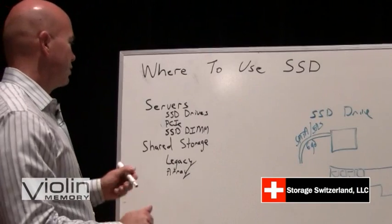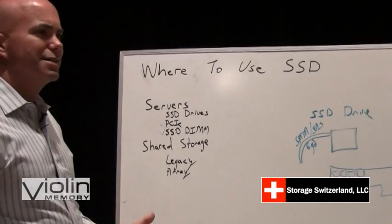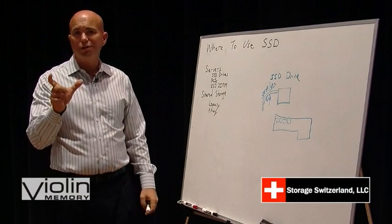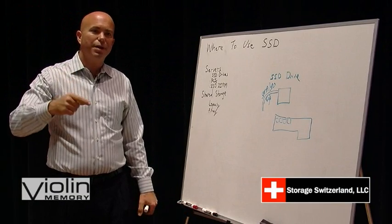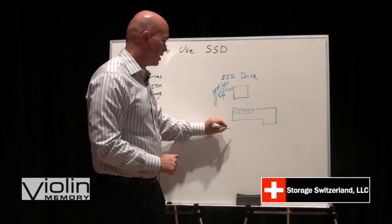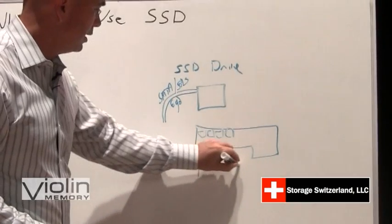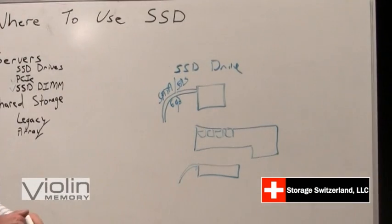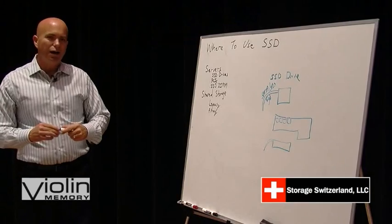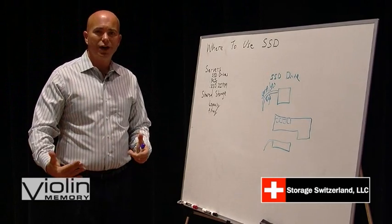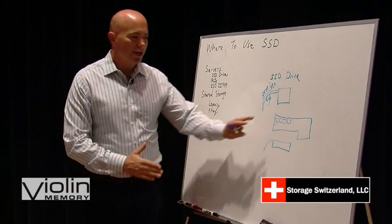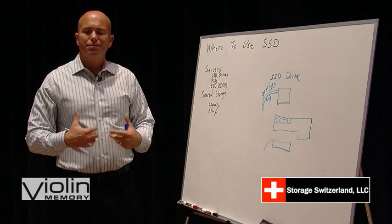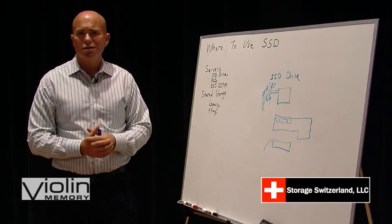A new option in the server-installed SSD market is what we call SSD DIMMs. These are solid-state drives that look like a memory DIMM — a RAM memory DIMM — except they have a little cable coming out of them that leads to a SATA connection. So they look like memory with a little cable out the side that hooks into your SATA or SAS connection. That makes them very viable as a boot device, and they don't have the space constraints that a PCIe-based card would have.